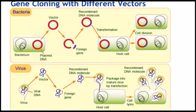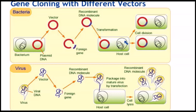Here we have gene cloning with different vectors — we see how it happens with both bacteria and a virus acting as vectors. In the first example, the bacterium is the vector, providing the plasmid DNA, which is used to form recombinant DNA with the foreign gene. The foreign gene represents the gene of selected interest — the gene carrying the desired information. That gene is merged with the plasmid DNA of the bacterium to form recombinant DNA, which is then placed back into the bacterial cell. As the whole cell divides and multiplies, more and more of that particular gene makes copies of itself.